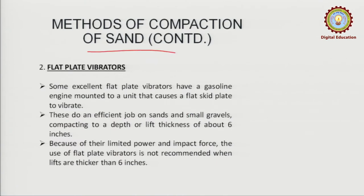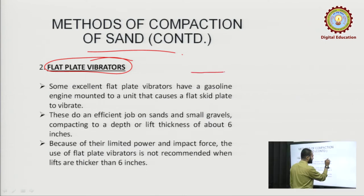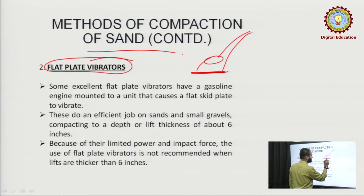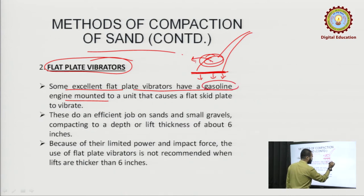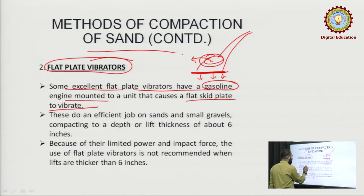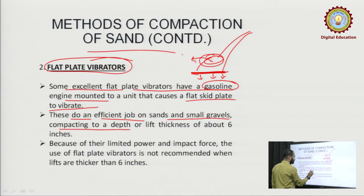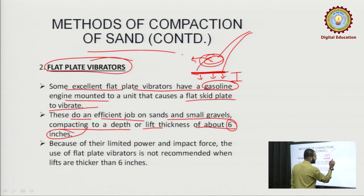The second method is the flat plate vibratory roller. As the name suggests, there is a flat plate and a motor mechanism. This plate vibrates, causing the compaction of the sand. Some excellent flat plate vibrators have a gasoline-mounted engine — working on petrol or diesel — connected to a unit that causes a flat skid plate to vibrate. These do an efficient job on sands and small gravels, compacting to a lift thickness of about 6 inches.